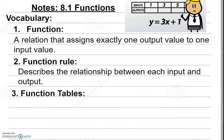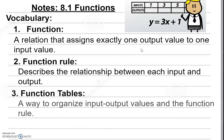The third term is function tables. A function table is a way to organize the input and output values and the function rule. You have the function rule given to you — it changes, it's not always going to be the same — and then in order to find out what Y is, you organize that information with the function table. Function tables may look different; they could be either horizontal or vertical depending on what you're given.